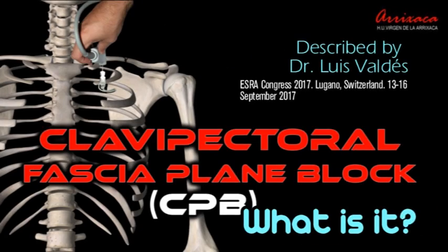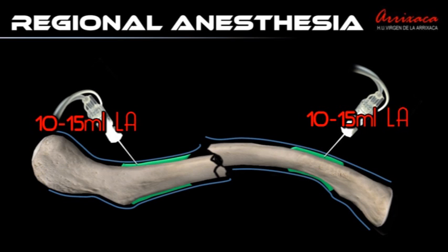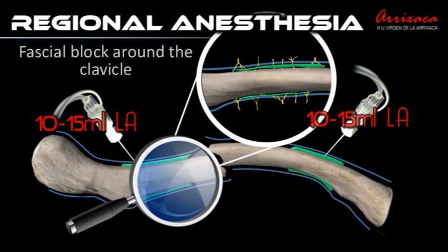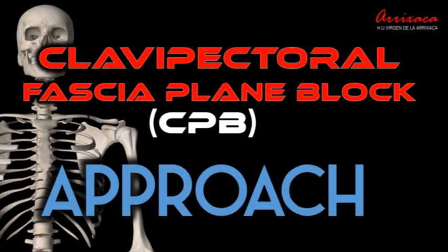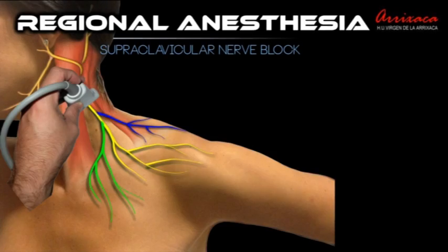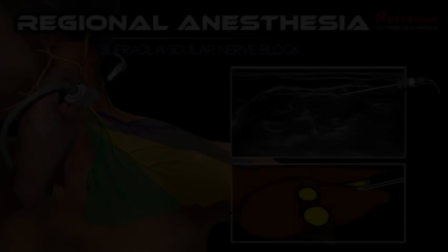The clavipectoral fascia block was first described in 2017. This block consists of injecting 10–15 ml of long-acting local anesthetic deep to the fascia on both the medial and lateral side of the clavicle fracture. This technique must be complemented by the block of the supraclavicular branch of the superficial cervical plexus to provide anesthesia on the skin above the clavicle.